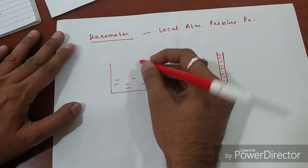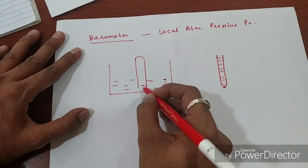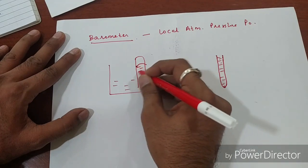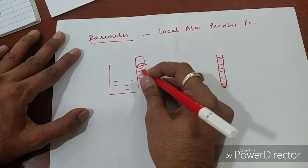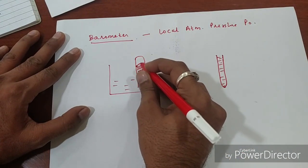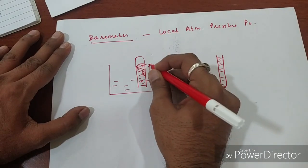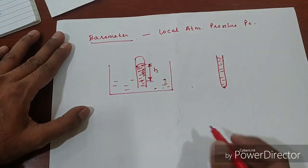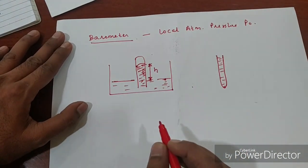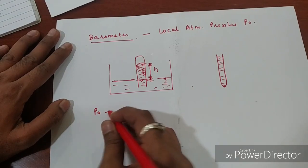In an inverted way, we will put the tube into the container. After putting the tube in the container, we will remove the finger. The mercury level in the tube will come down, and this is the interface of the mercury in the tube. This height we can measure with the help of a scale, and this is the surface of the mercury in the container.